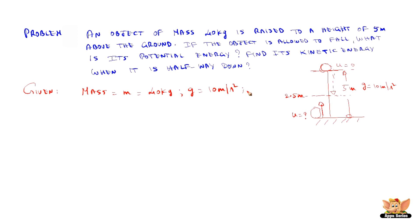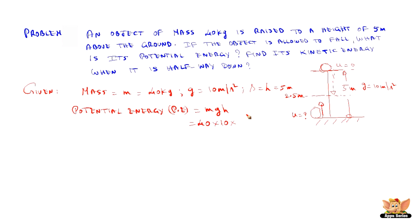To find the first part of the problem, potential energy is mgh. So m is 40 kg, g is 10, and h is 5, and on multiplication we get 2000 joules. This is the potential energy of the object when the object is allowed to fall down the full distance of 5 meters, which is 2000 joules.